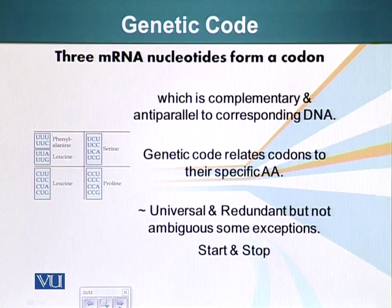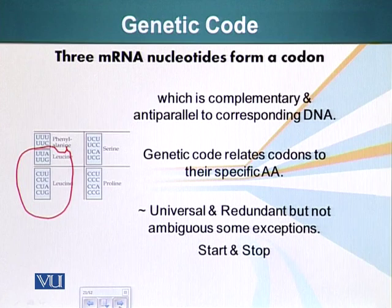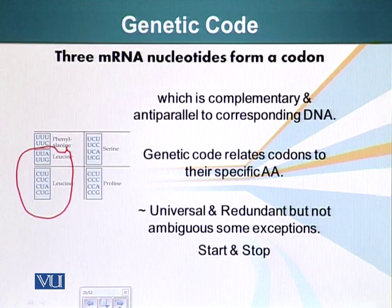Redundant means that more than one codon can specify one particular amino acid. On the screen you can see, for example, leucine has six codons — all these codons specify leucine. Wherever these codons appear in messenger RNA, leucine will be placed in the resulting protein. It is not ambiguous, meaning these codons will only result in leucine. It does not mean that sometimes a codon will specify leucine, sometimes serine, sometimes proline — that doesn't happen. It is redundant but not ambiguous; it is always specific.